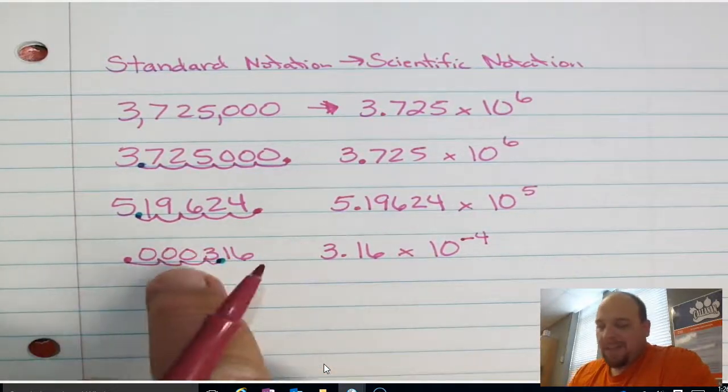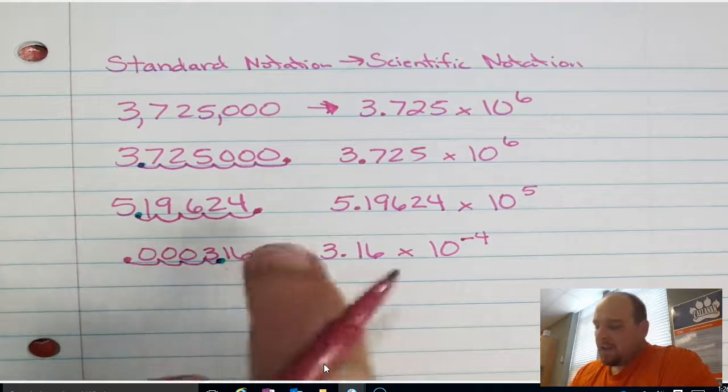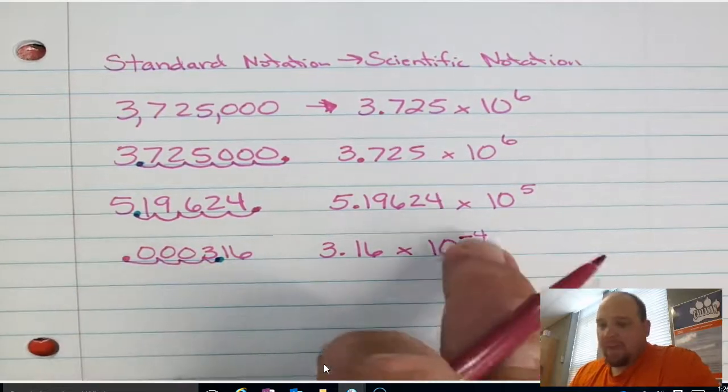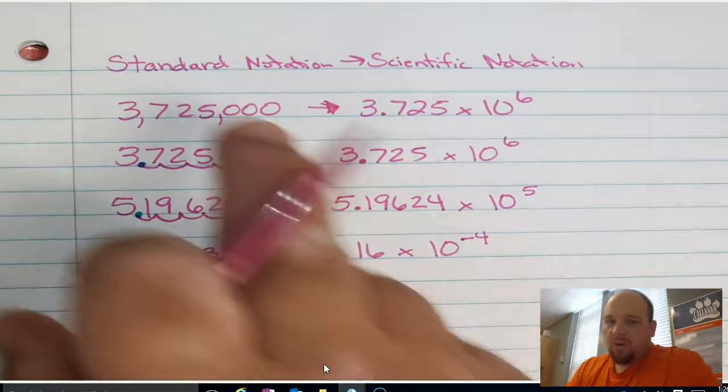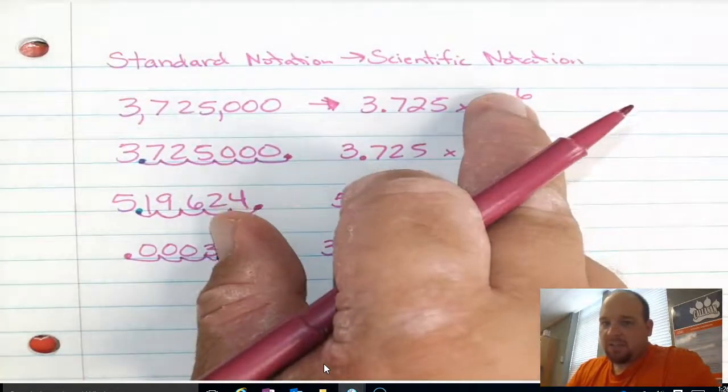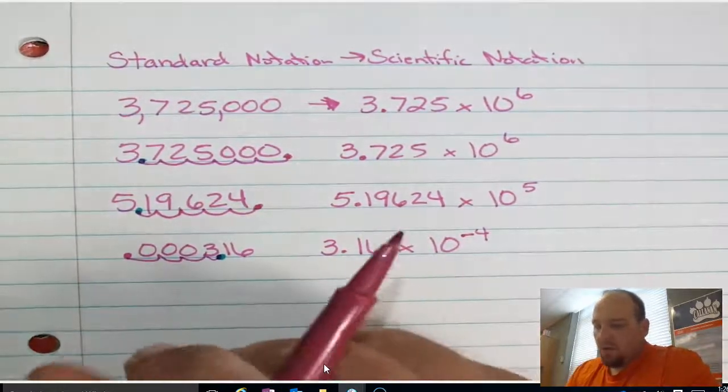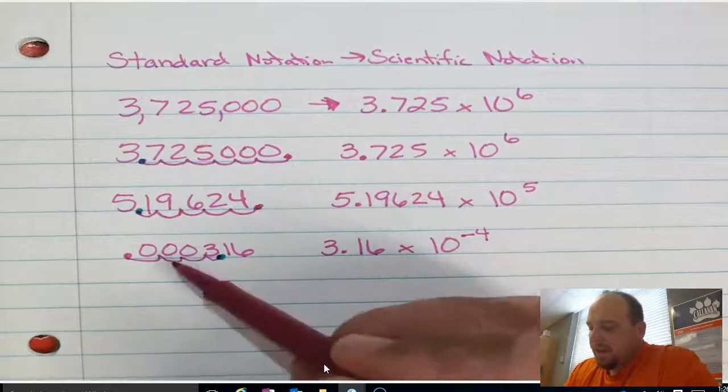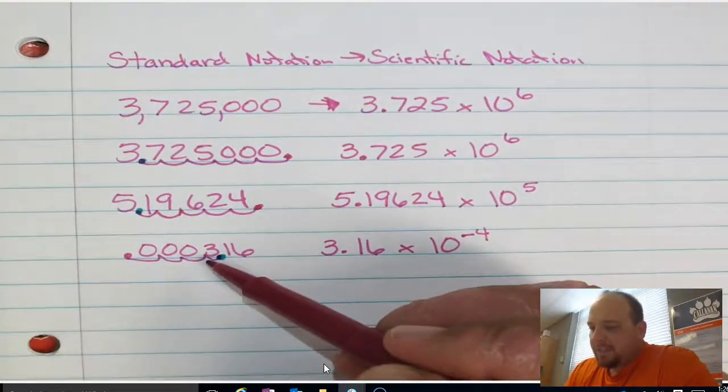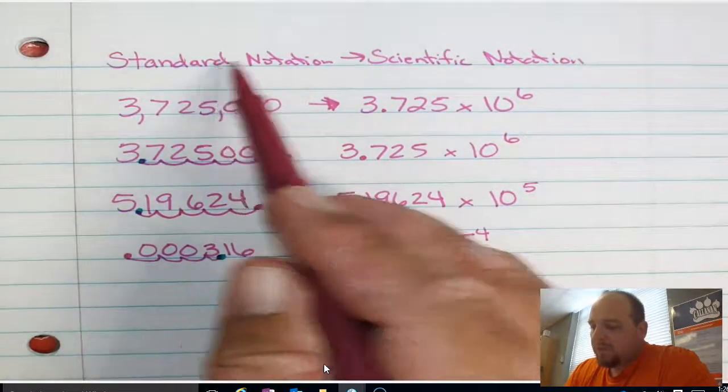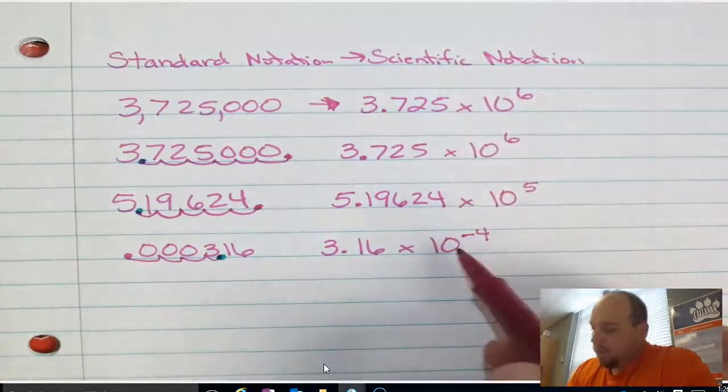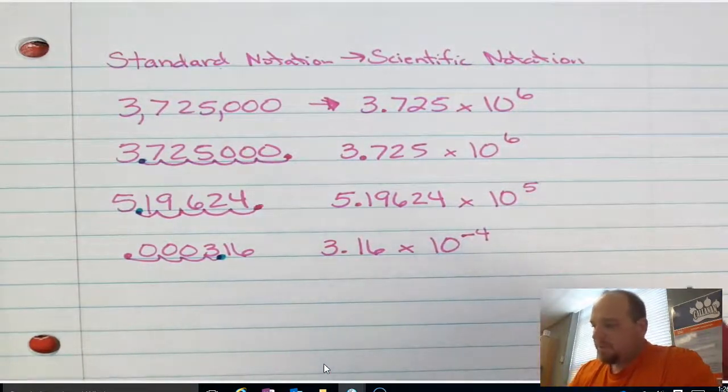And another way to think about it, this is a decimal, a number less than 1. Anytime the number is less than 1, we're going to have a negative exponent when we go from standard notation to scientific notation. So you might want to make a note of that in your notebook. I'll say that again. Anytime that we have a number that is less than 1 and we're going from standard notation to scientific notation, we're going to have a negative exponent.